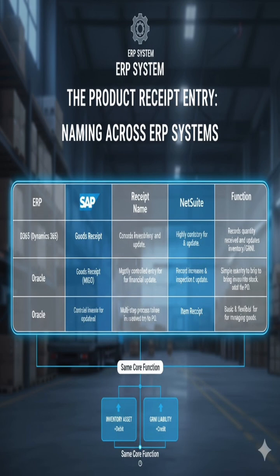ERP systems handle receipts under different names but with consistent functions. In D-365, it is called Product Receipt and records quantity received, updating inventory via GRNI. In SAP, it is called Goods Receipt — a highly controlled entry for inventory and financial updates. Oracle uses Receiving, a multi-step process to record and inspect received items. NetSuite calls it Item Receipt, a simple entry to bring inventory into stock against a PO. Odoo uses Receipt Order, a basic and flexible transaction for managing incoming goods.